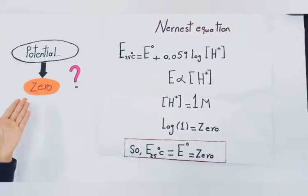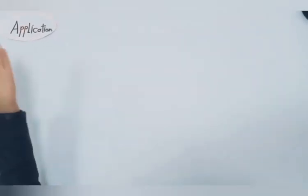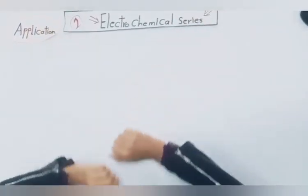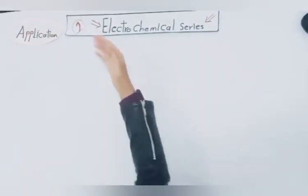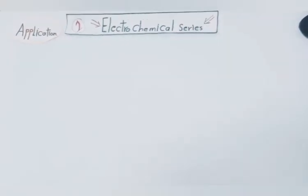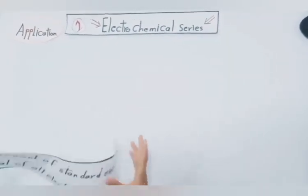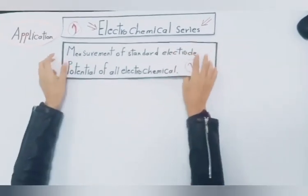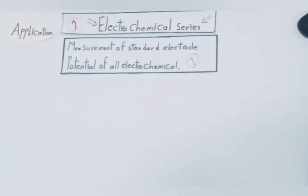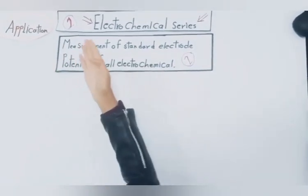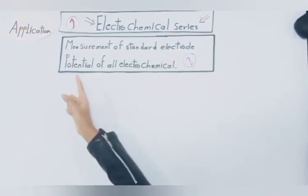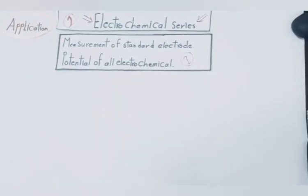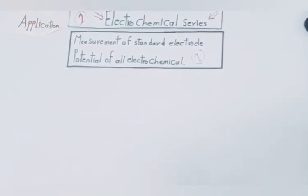The standard hydrogen electrode has two main applications. First, we use it to construct the electrochemical series. Second, we use it to measure the standard electrode potential of all electrochemical cells.